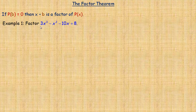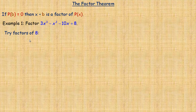In the first example, we are asked to factor 3x cubed minus x squared minus 10x plus 8. To find a number that gives a remainder of 0, we try factors of 8 — the constant at the end — which could be plus or minus 1, plus or minus 2, plus or minus 4, or plus or minus 8.